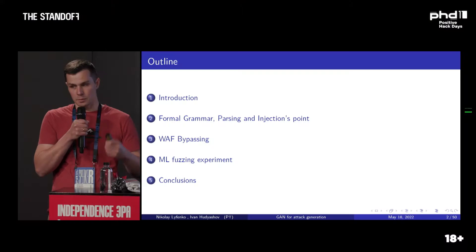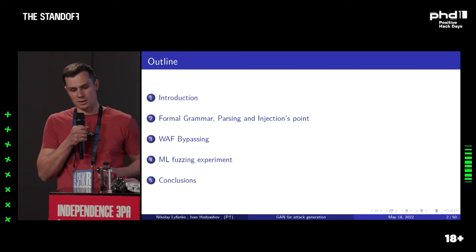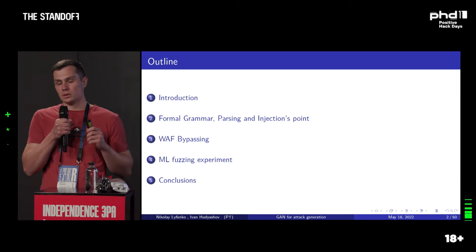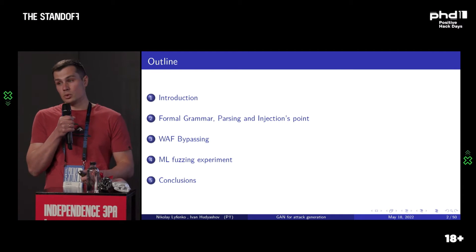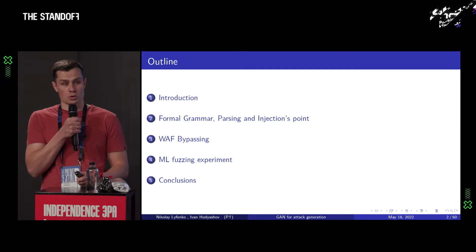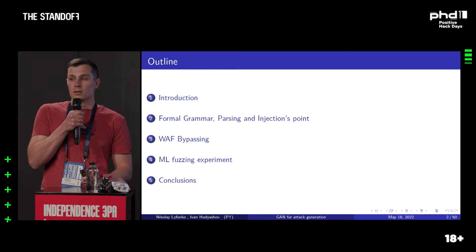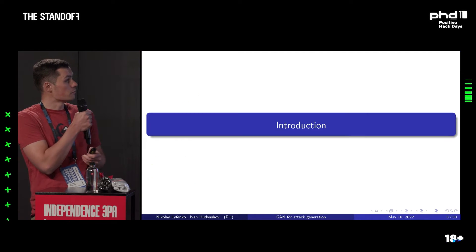First of all, introduction, then a short story about some theory, formal grammar — this hardcore thing — parsing injection points and trees, and then WAF bypassing and how it helps us prevent these attacks, to be precise, and the actual ML fuzzing experiment, and some conclusions hopefully will follow.